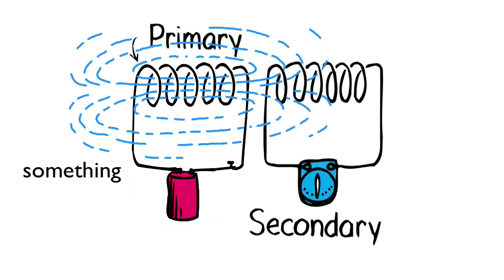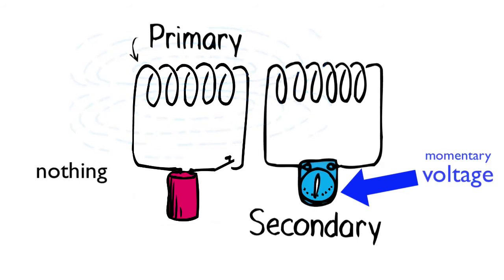As this change occurs, there's a momentary voltage that is again generated in the secondary loops, but it's a voltage of an opposite direction.